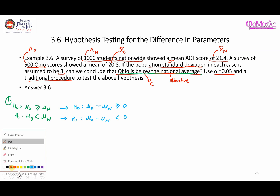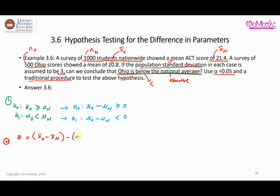The second step is to obtain the test statistic. The formula for z follows the convention from the hypothesis statements, which is Ohio minus nationwide. So we have the sample mean for Ohio minus the sample mean for nationwide, divided by the square root of the population variance for Ohio over the Ohio sample size plus the population variance for nationwide over the nationwide sample size.